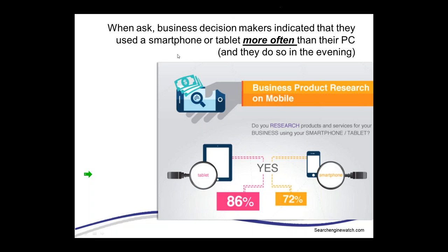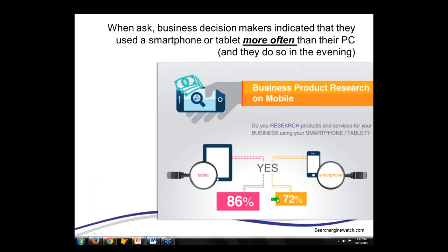This is interesting — business decision makers use their smartphone or tablet more than their PC, and they do so in the evening. 86% of people use tablets; 72% use a smartphone. If you find a site with a smartphone that is mobile-ready and you can get the information you need, you're likely to go back again. It all ties to eyeballs, to traffic, to getting your prospects and students to come back and do business with you.